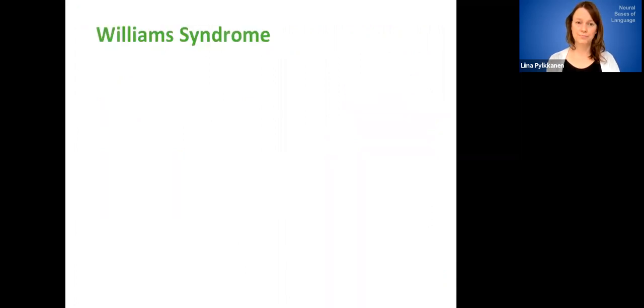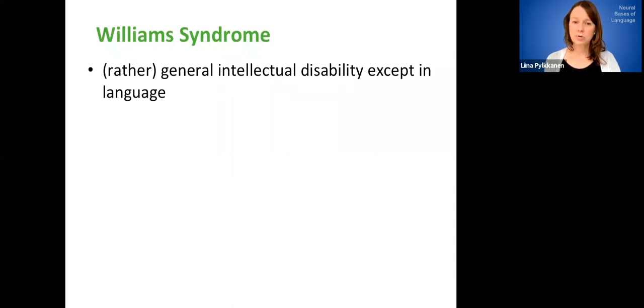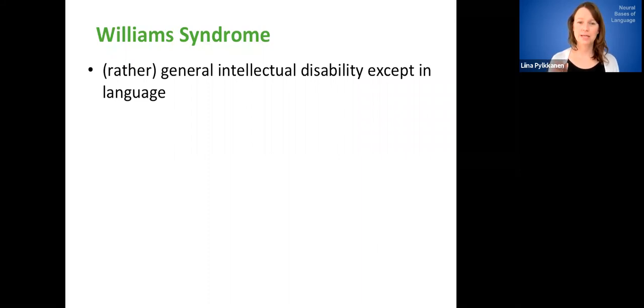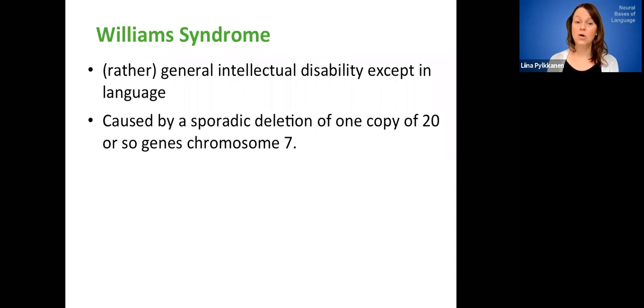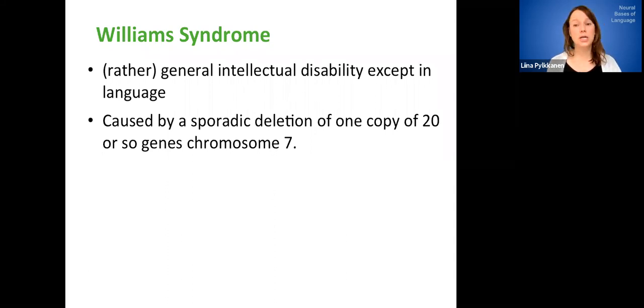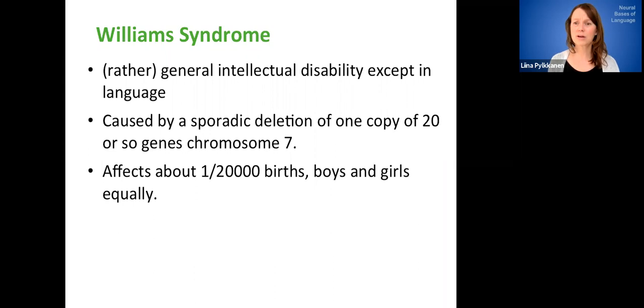And there is a developmental disorder that kind of has that profile. That's called Williams Syndrome. So Williams Syndrome is a pretty general intellectual disability in which language is really good. Okay, so language kind of dissociates from many other intellectual disabilities. It's not just language though and I'll clarify that in just a sec. Williams Syndrome is caused by sporadic deletion of one copy of 20 or so genes in chromosome seven. Okay, and so for Williams Syndrome in the general population, the genetic basis is well understood. So it's in contrast to SLI in that sense. And it's also for that reason a kind of a less confusing literature. It's much rarer than SLI. So it affects about one in 20,000 births.